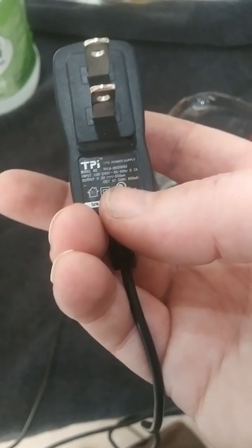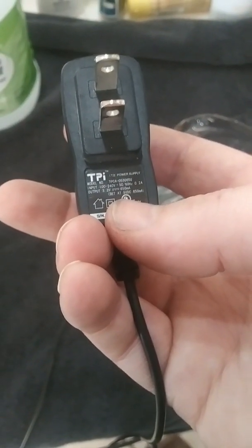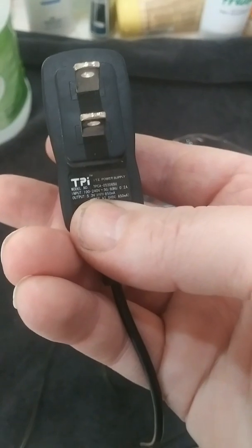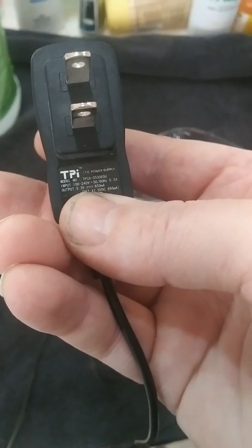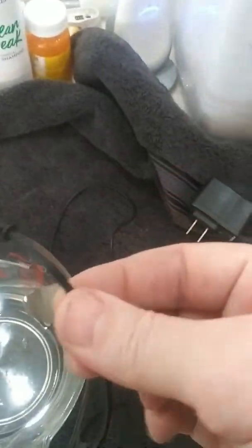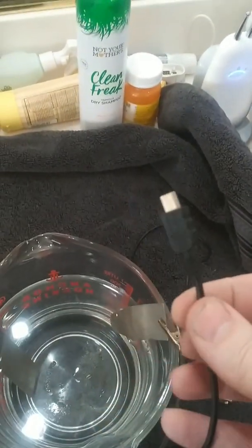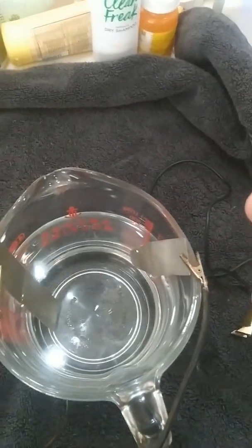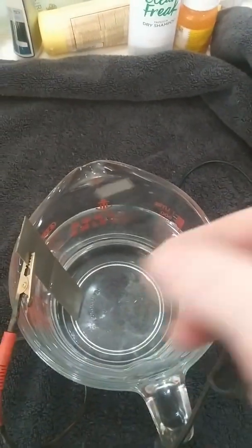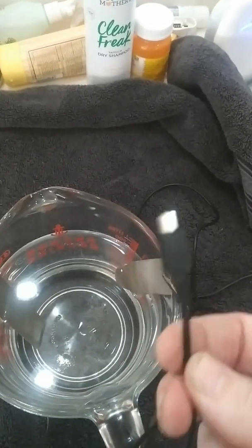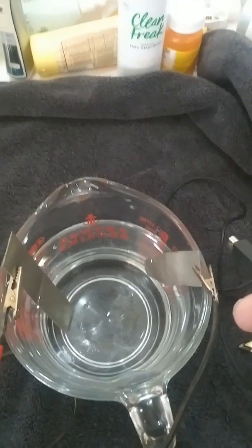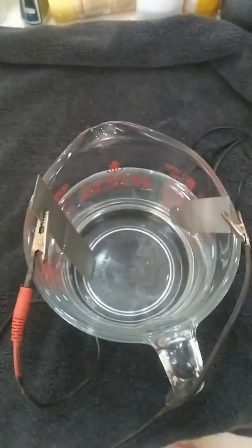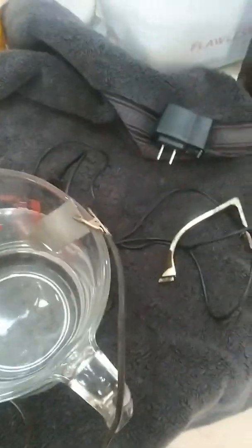Another solution for power is an old phone charger, a regular wall wart style phone charger. If you look, the most important part is your output. This one is 5.3 volts at 650 milliamps - this will work just fine. To use one of these old phone chargers, cut the cable. When you cut it, there'll be two main wires on the inside - your positive and your negative.